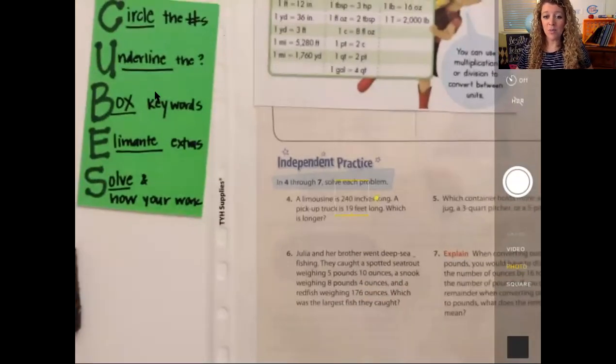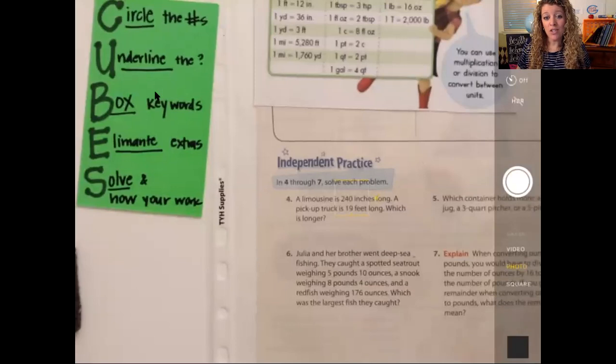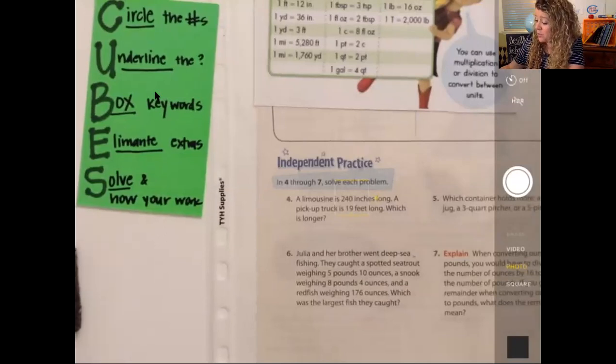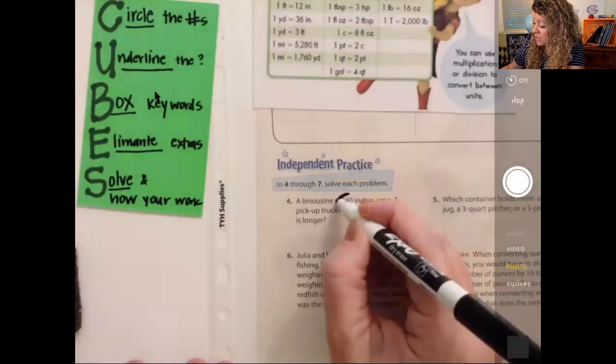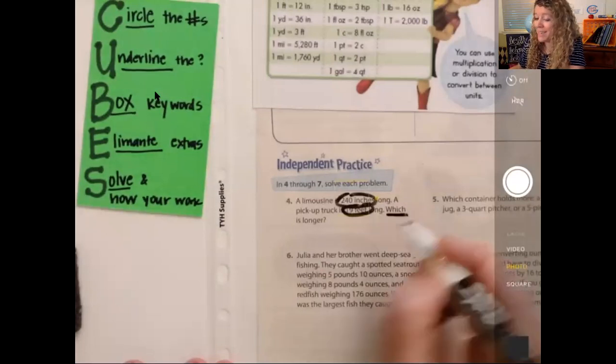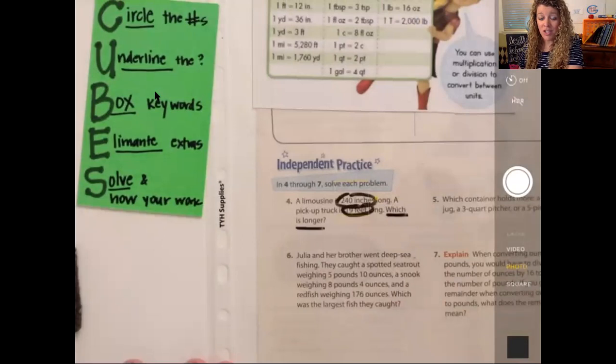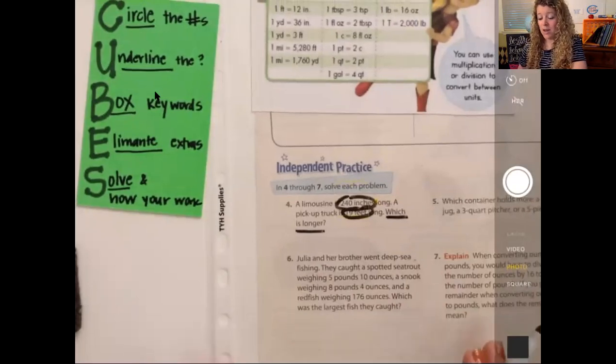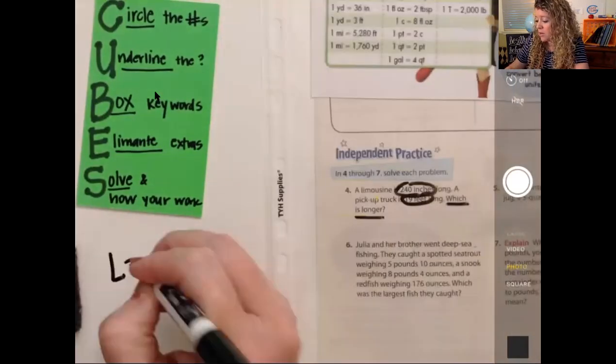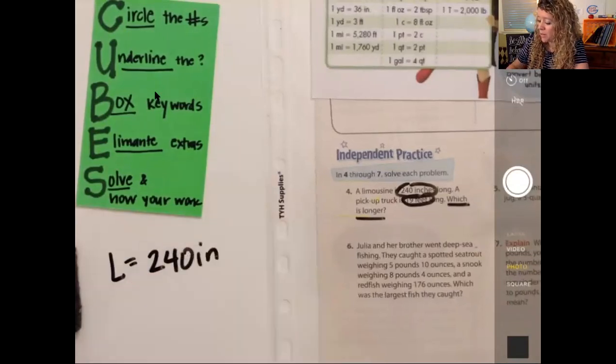So let's get started on our independent practice. Let's pull it over here, and I'm going to leave the gal right up here at the top so we can continue to see. All right, let's read this first one. A limousine is 240 inches long. A pickup truck is 19 feet long. Which is longer? Well, our initial thought is 240 inches and 19 feet. Those are our two numbers. What we can't do is we can't compare inches with feet. We have to convert them to be the same unit. So we know that a limo is 240 inches, and we're going to think a pickup truck is how many inches?